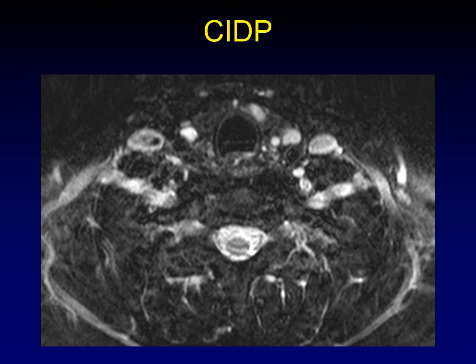Here's the same appearance in the axial plane. You can see individual nerves that are markedly enlarged. How do we know this is the brachial plexus and not lymph nodes or vessels? Here's the anterior scalene muscle, there's the middle scalene muscle — these structures are running right through the scalene triangle. What runs through the scalene triangle? The brachial plexus. So these are the three trunks of the brachial plexus on each side, markedly enlarged by the patient's inflammatory disease.